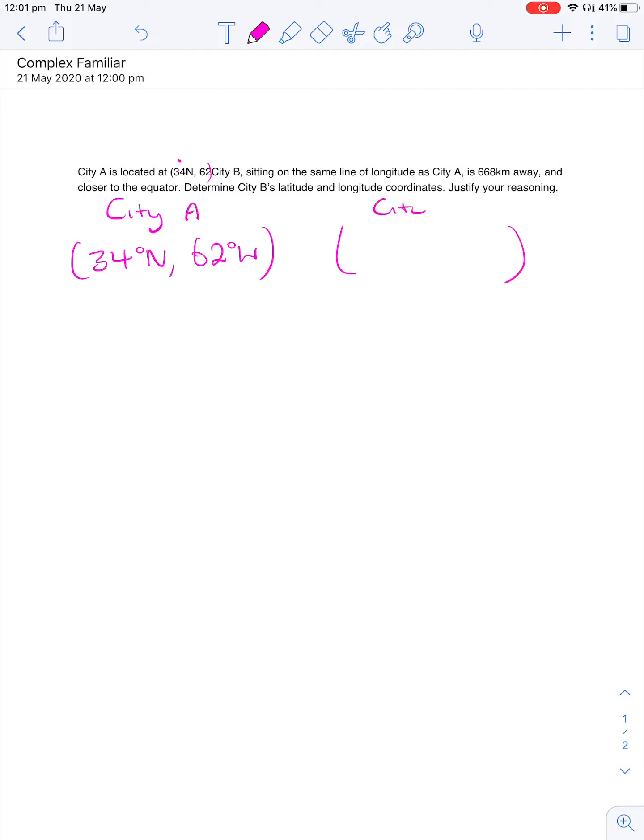And then City B, they've said that City B is sitting on the same line of longitude. If it's sitting on the same line of longitude, that means the longitude is exactly the same as City A. So I'm going to put 62 degrees west. Now they haven't given us our latitude, so I'm just going to say that that's X.